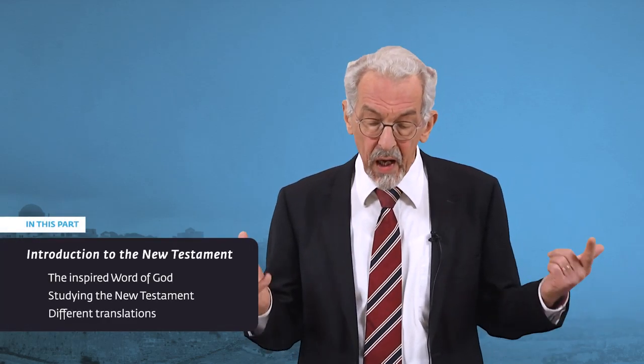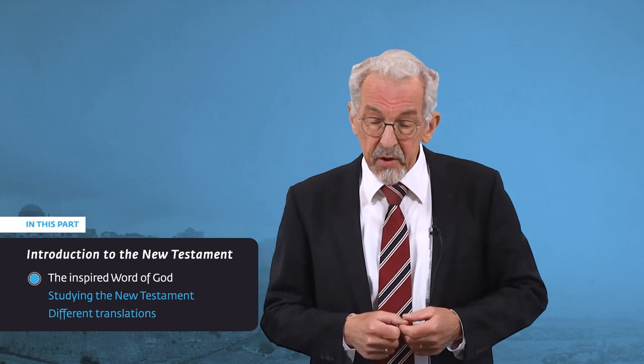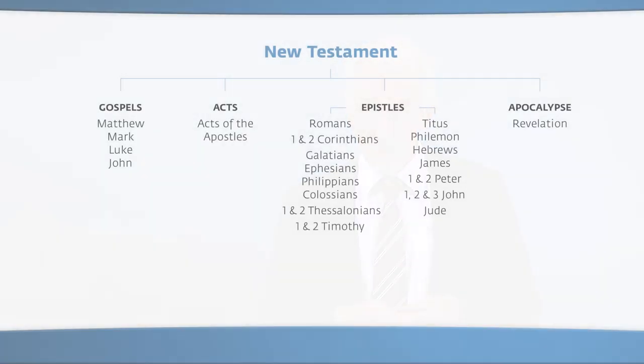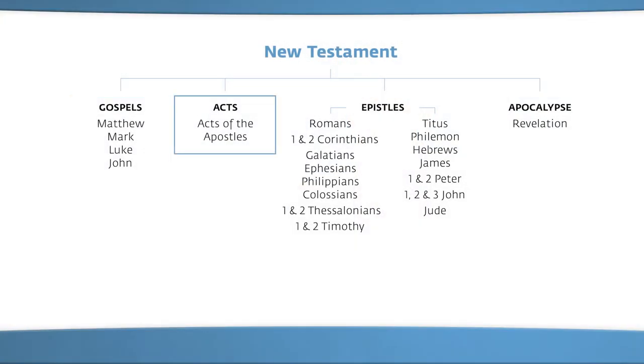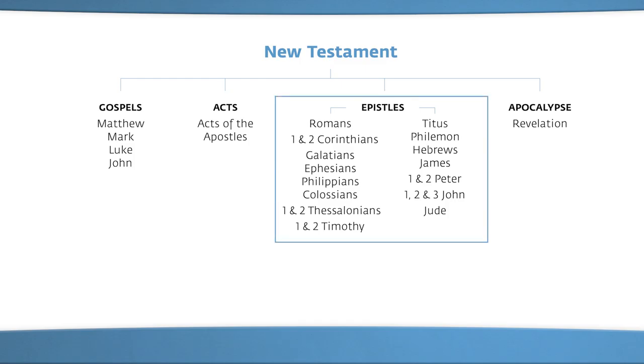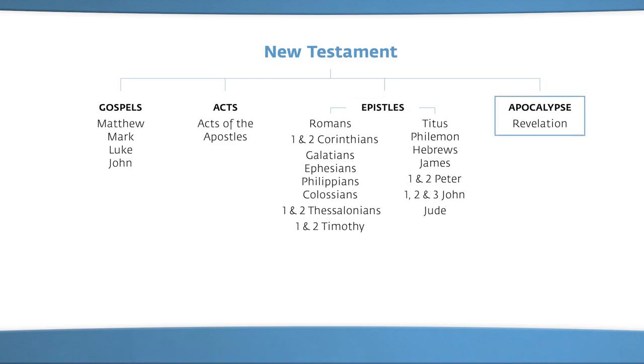The first item in this lesson is the inspired Word of God. The question is: how did the New Testament come into being? The New Testament contains 27 books — four Gospels, a book about missionary journeys, the Acts of the Apostles, 21 letters, and a prophetic book, the book of Revelation.